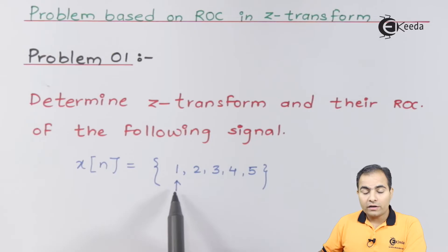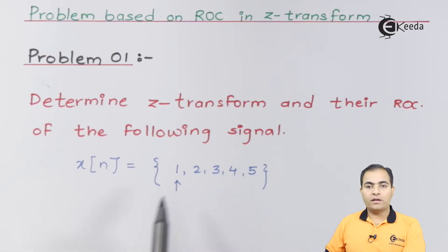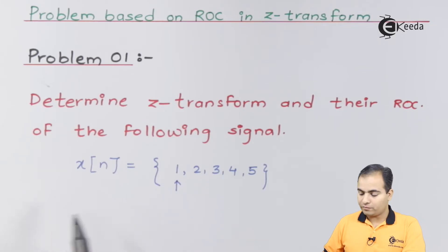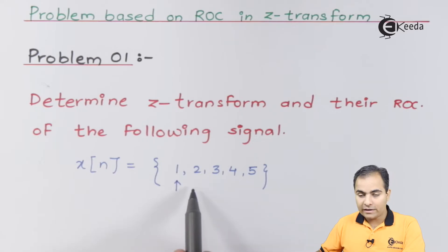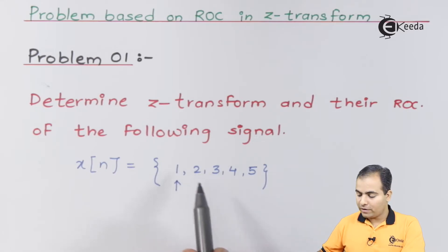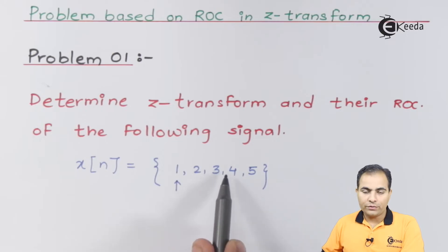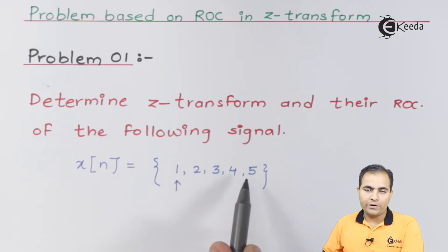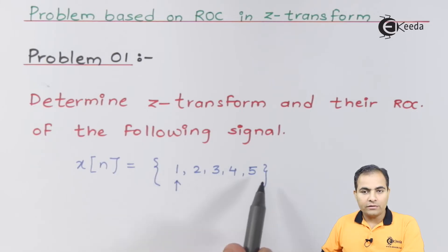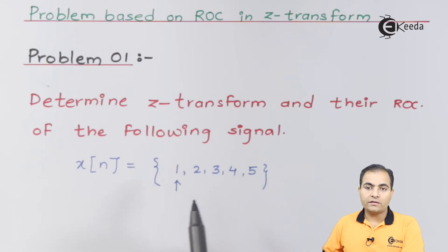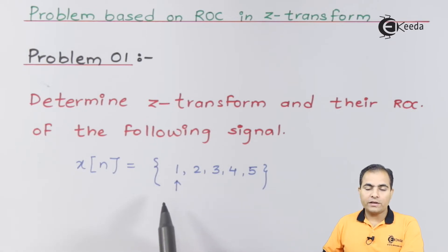On the right-hand side of the origin we always have positive instances, and on the left-hand side we have negative instances. So at n=0, amplitude is 1; at n=1, amplitude is 2; at n=2, amplitude is 3; at n=3, it is 4; and at n=4, amplitude is 5.